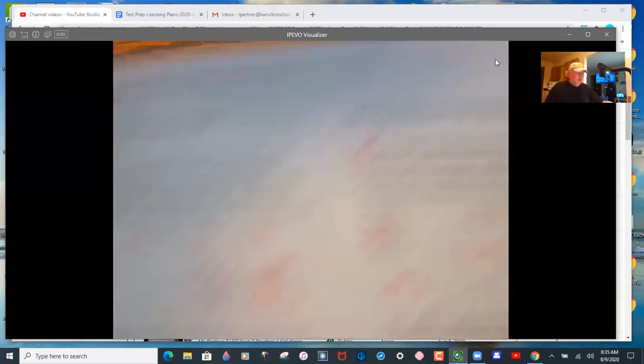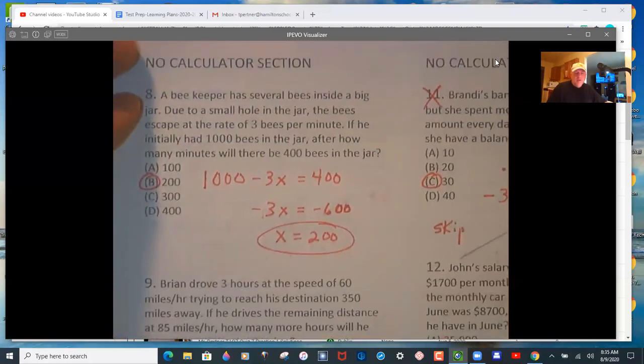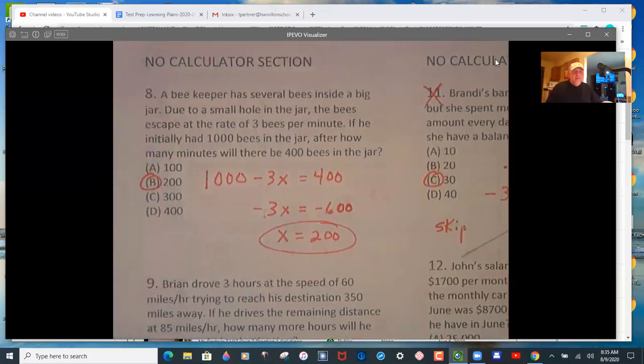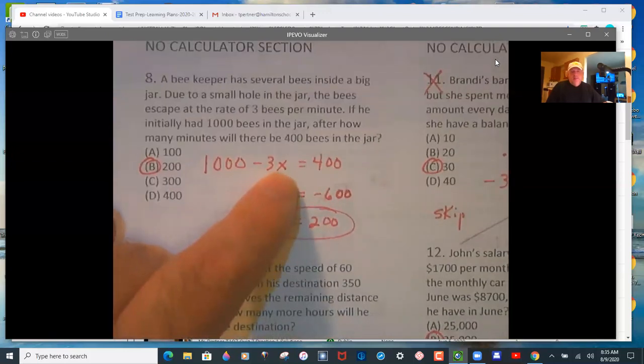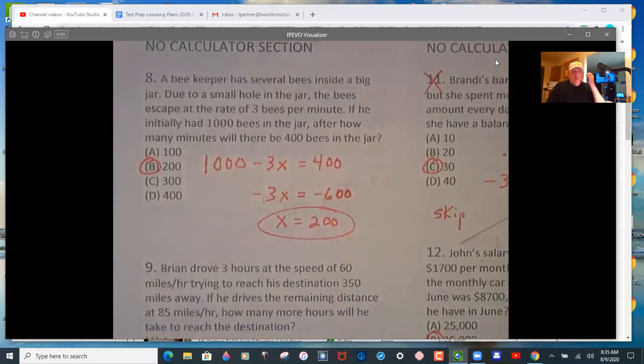Again, no calculator work on much of this. So the word problem section, you have to kind of think in terms of, I have some starting quantity, plus or minus the slope times x equals a new quantity. So minus the slope would mean that you're decreasing, you're losing something. So bees are escaping at 3 per minute here. So you're starting with 1,000, bees are escaping at 3 per minute times so many minutes equals a new result of 400 bees. Solve for x, and then you get 200 after you divide.